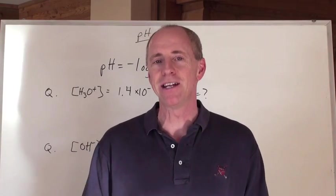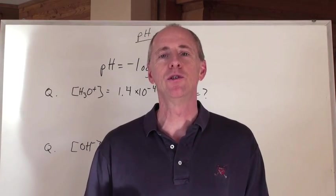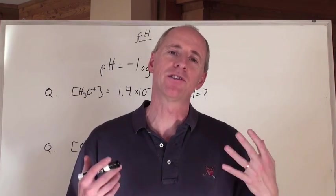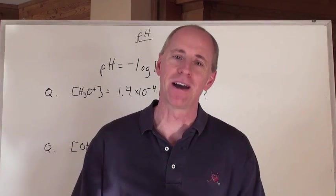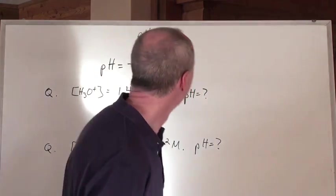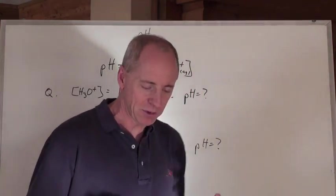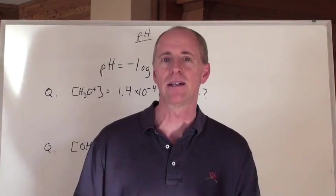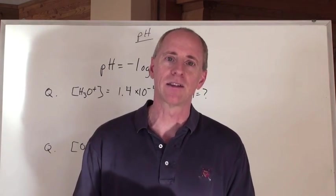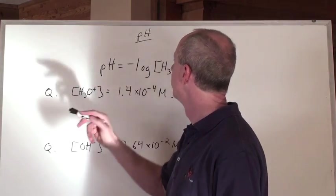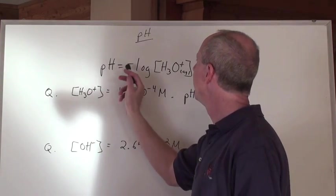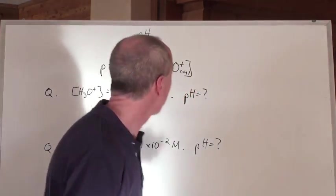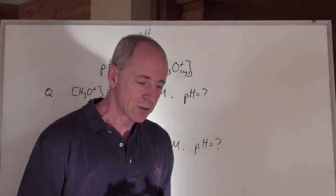We calculate the pH to be able to determine how to express the concentration of hydronium ion in solution. Some people say pH stands for the power of the hydrogen or the power of the hydronium, but it doesn't really mean that. P stands for negative log — that's it. The P is the negative log, and the H stands for the hydronium and the concentration of the hydronium.